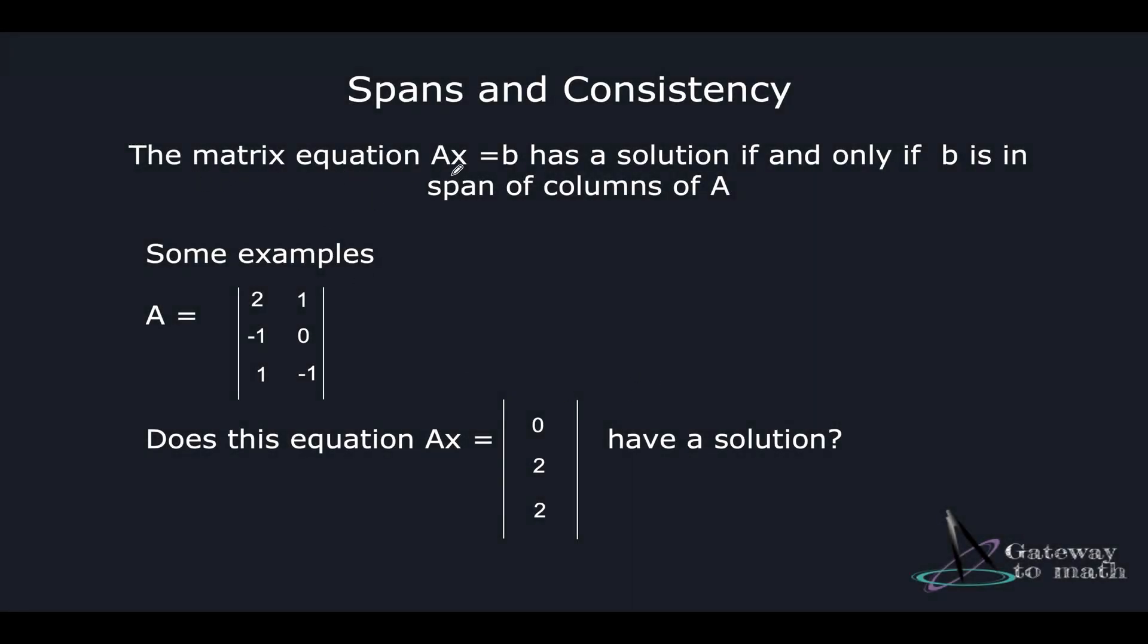The matrix equation Ax = b has a solution if and only if b is in span of columns of A. Why? Because b can then be represented in the form of linear combinations of all the vector spaces in that linear space: x1v1 + x2v2 and so on.